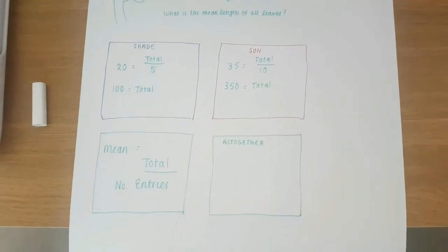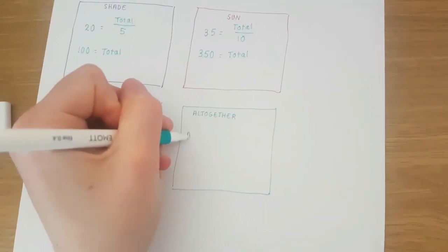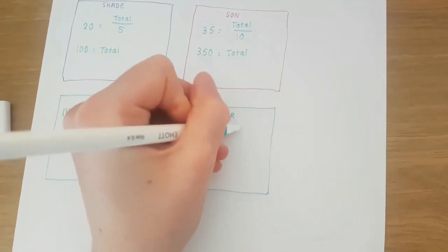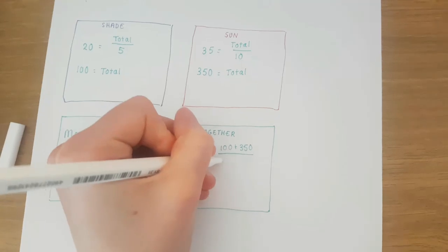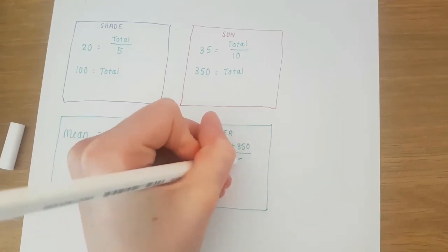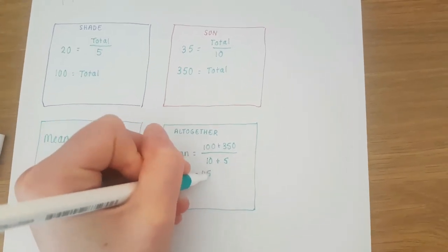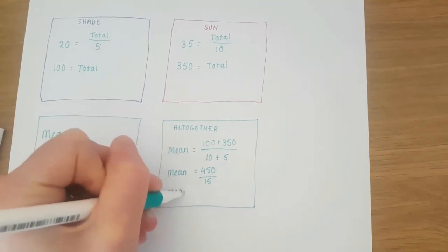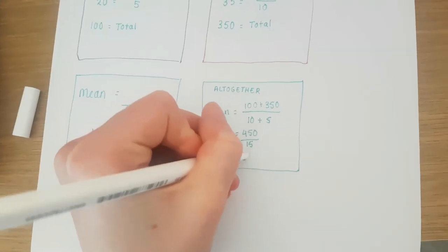Now we know the total in the shade and in the sun we can find all together because the total is going to be 100 plus 350. The number of entries is 5 entries from the shade and 10 entries from the sun, so I have 10 plus 5 as 15. So my mean is going to be 450 over 15. Therefore my mean is going to be 30 centimeters.